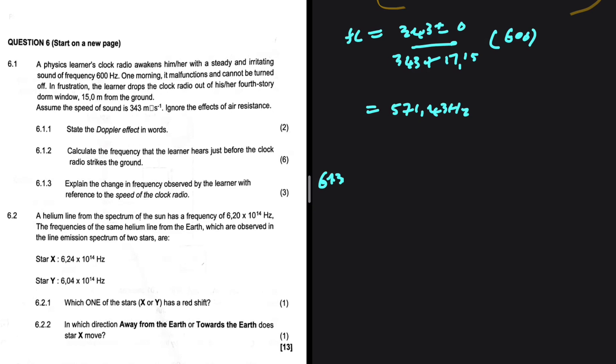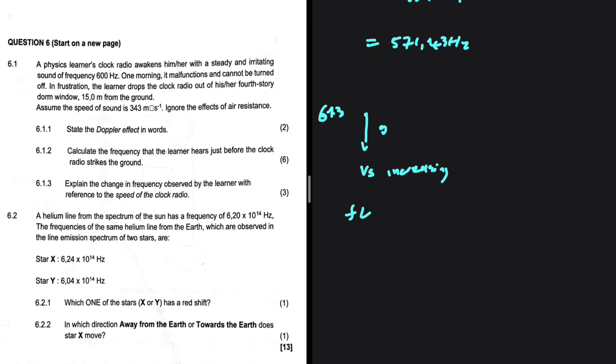So as the clock is going down, obviously under the influence of gravity, then the velocity of the source is increasing. We know fully well that the frequency observed by the listener equals V / (V + VS) × FS. So if VS is increasing, then FL should be decreasing. The frequency observed by the listener should be less than that emitted by the sound source.